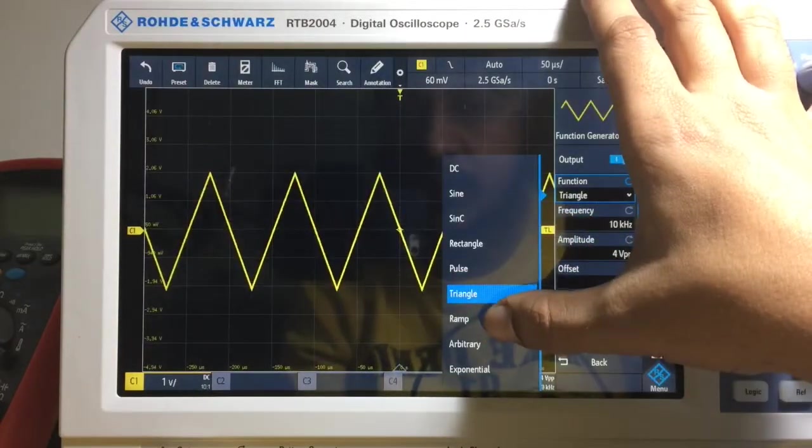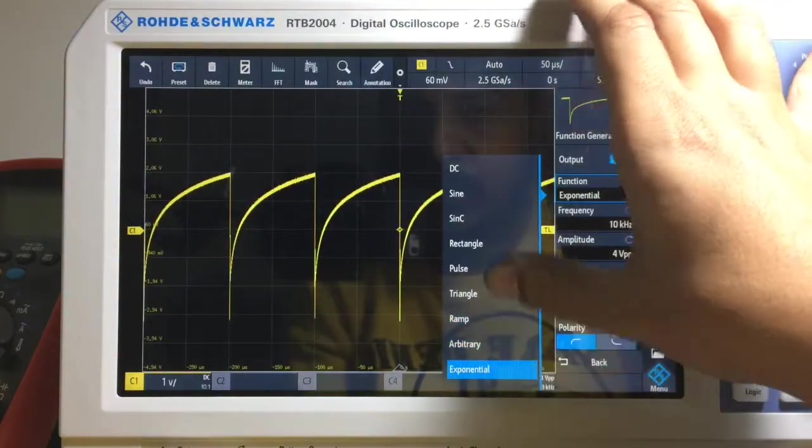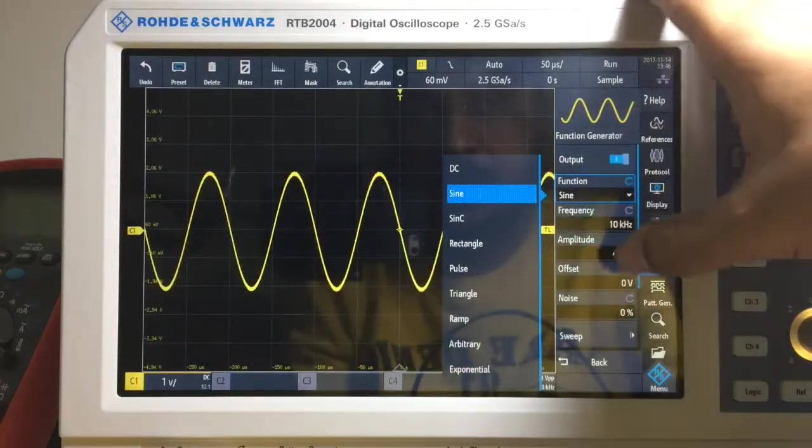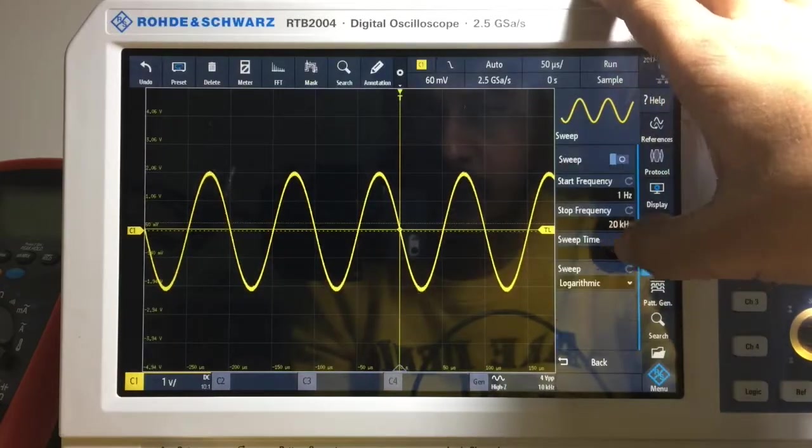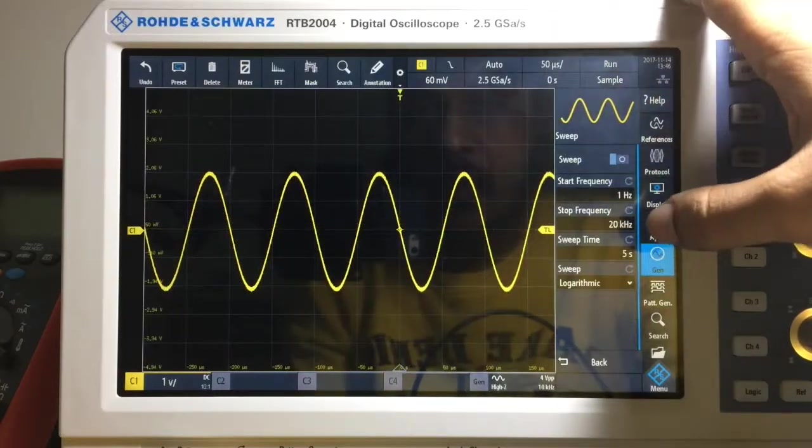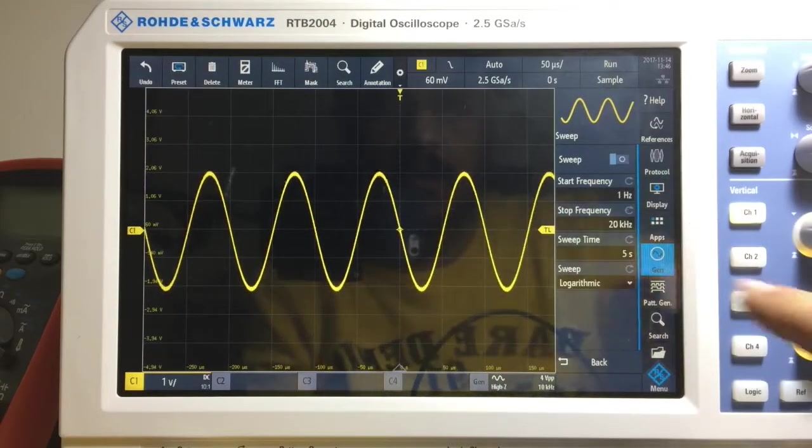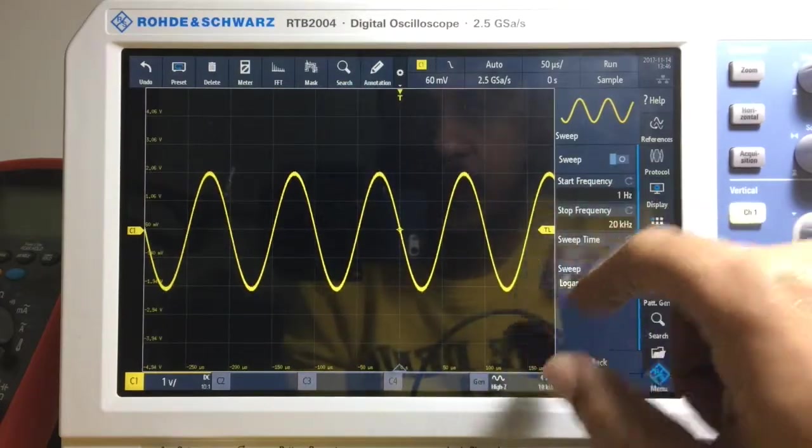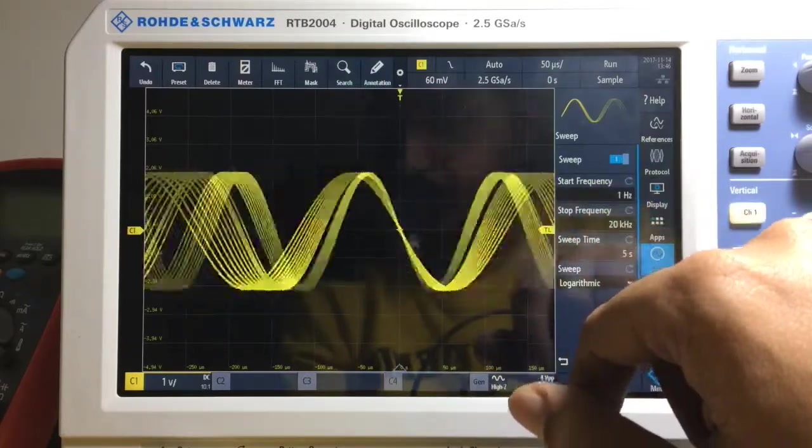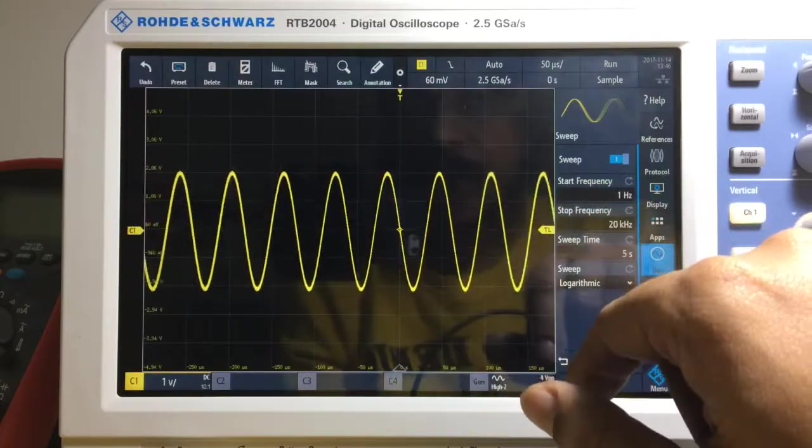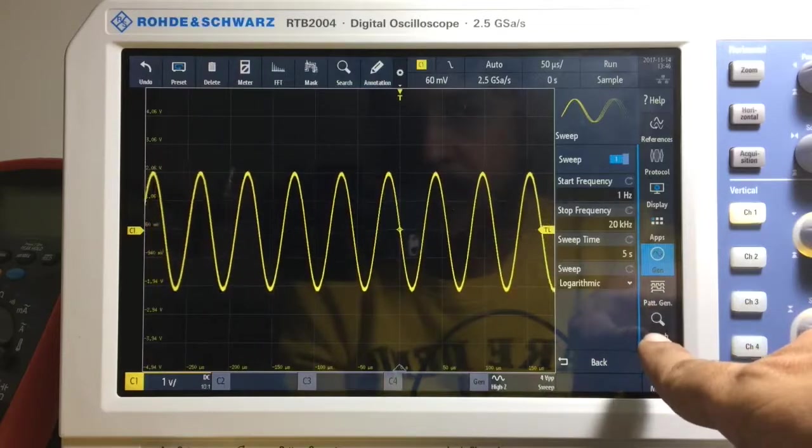There's triangular ramp, and arbitrary where you can actually use a file to enter those. I'm interested in the sine function right now. I want to be able to vary the frequency of it, so I'm going to use the sweep function. Since I'm expecting a cutoff of 15.9 or 16 kilohertz, I'm going to drop it at 20 kilohertz starting with one kilohertz. The sweep time can be changed; five seconds is good enough, so it will go from one hertz to 20 kilohertz in a logarithmic fashion.